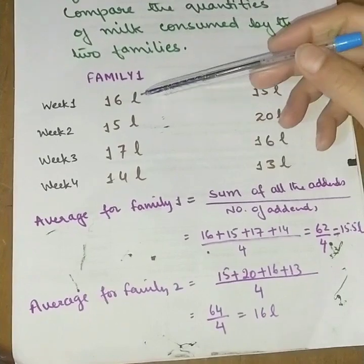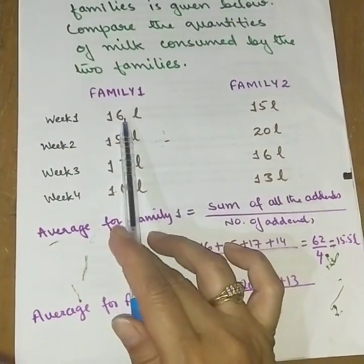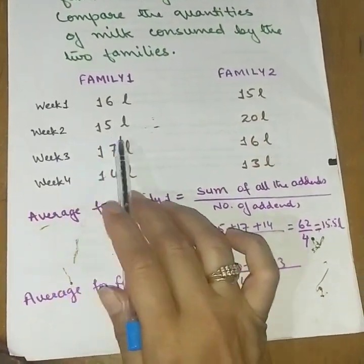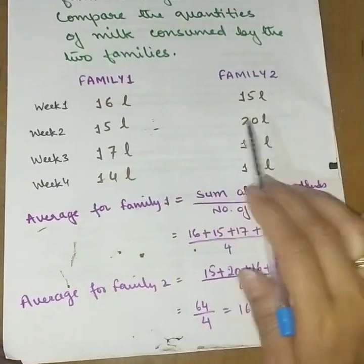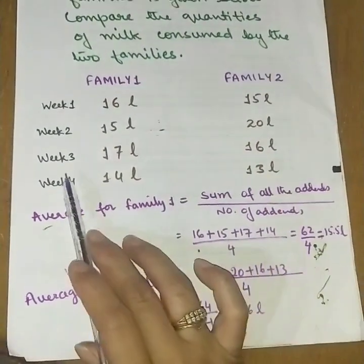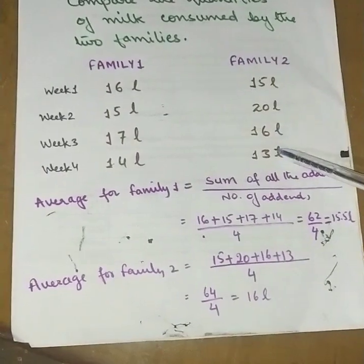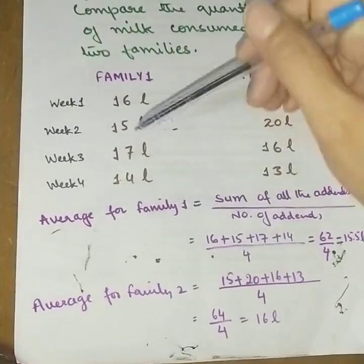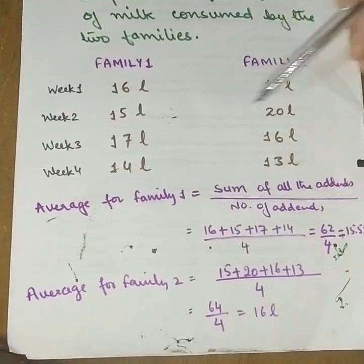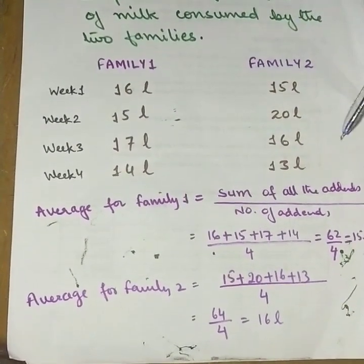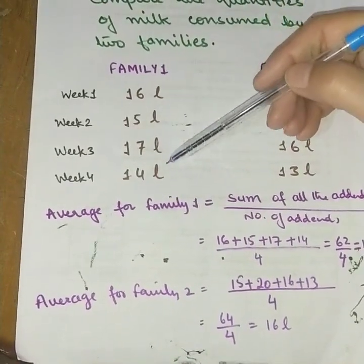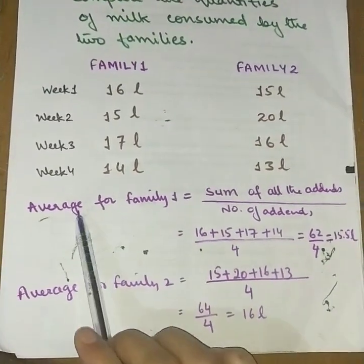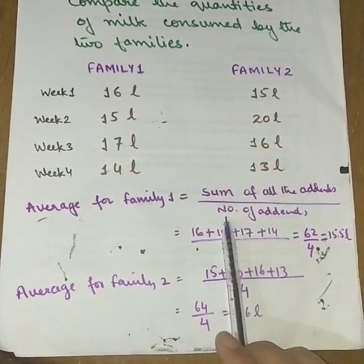There are four weeks of data. Family 1 consumed 16, 15, 17, and 14 liters across the four weeks. Family 2 consumed 15, 20, 16, and 13 liters across the four weeks. To compare the two families, we will first find the average for Family 1, then find the average for Family 2.